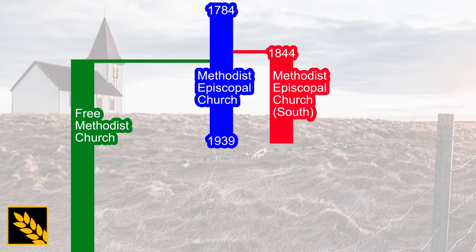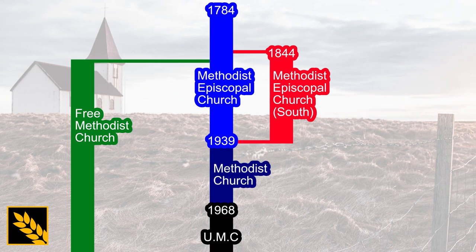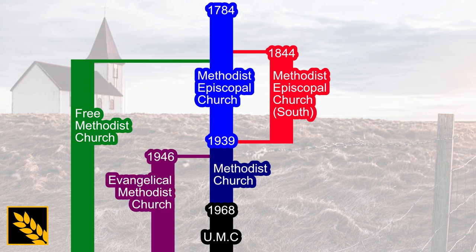In 1844, the Methodist Episcopal Church, South, had also left the MEC, and years later, in 1939, they merged back into the MEC to form the Methodist Church. From this denomination, the Evangelical Methodist Church split in 1946 over issues of theological liberalism in the Methodist Church and the EMC's Wesleyan emphasis. The Methodist Church would later merge with another denomination to make today's United Methodist Church.